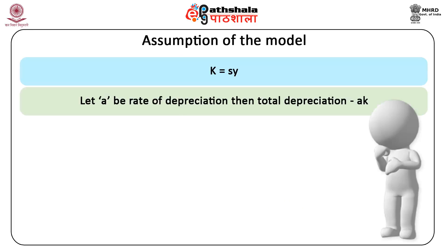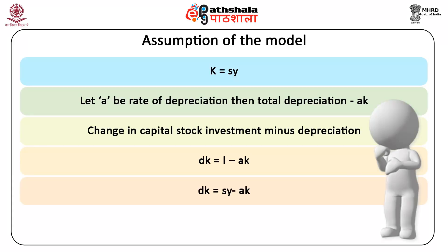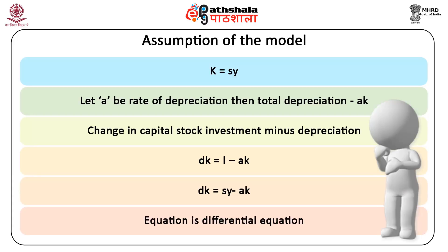According to this model, some proportion of output is saved and invested, so the capital stock depends upon the savings rate s: k = sy. Let a be the rate of depreciation, then total depreciation is ak. The change in capital stock is investment minus depreciation: dk = sy − ak. This equation is a differential equation.